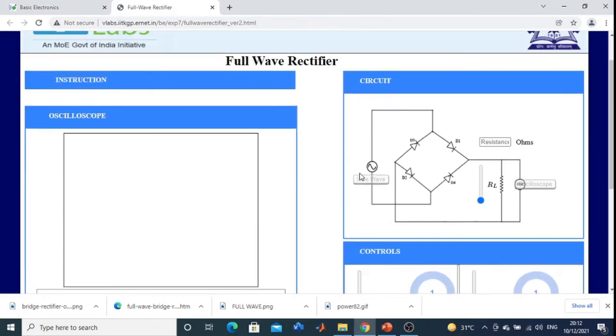Here also you see the circuit. D3, D1, D4, D2. I will explain how it will conduct. You start from here: D1, load resistance.